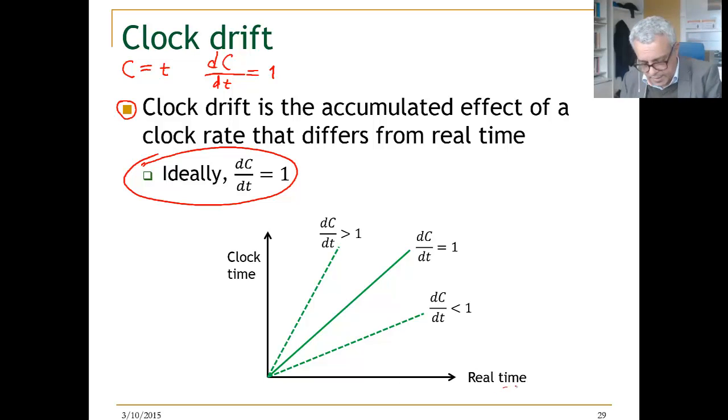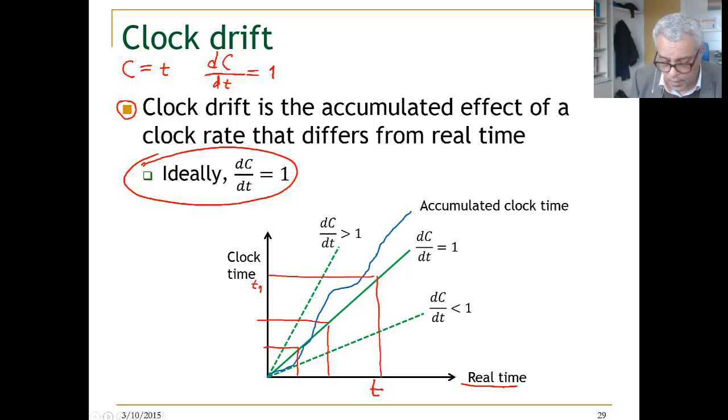If we draw a picture where the x-axis is real time and the y-axis is the clock time, ideally the clock moves the same as real time. So at a certain time T here, the clock also is T. But in reality, that is not the case. The clock moves in this cone. The accumulated clock time, that's this curve, shows the accumulated clock time. For example at time T, our physical clock on the process says this is the number of ticks or the time.